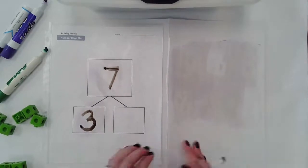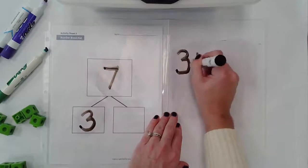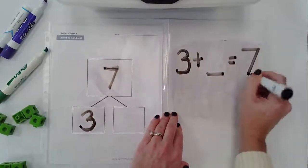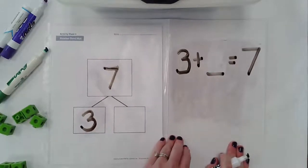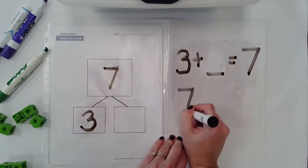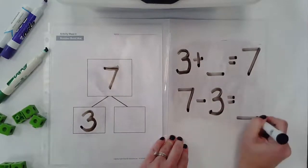Well one way is I could use addition. I could think about three plus what gives me seven? I could also think about it as subtraction. I could say seven take away three gives me what number?